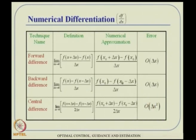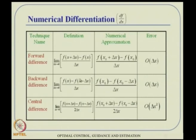The error for forward or backward difference is of order Δx, while for central difference it is of order Δx². So central difference is more accurate. However, sometimes forward or backward difference must be used — for example, at boundary grid points where values on one side are unavailable. Wherever possible, use central difference for better accuracy.